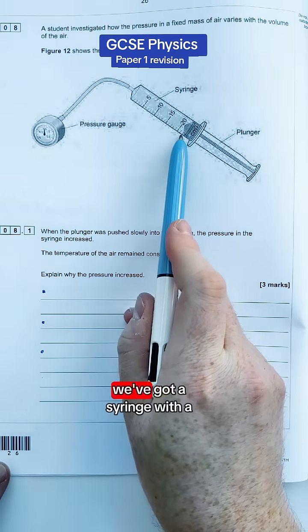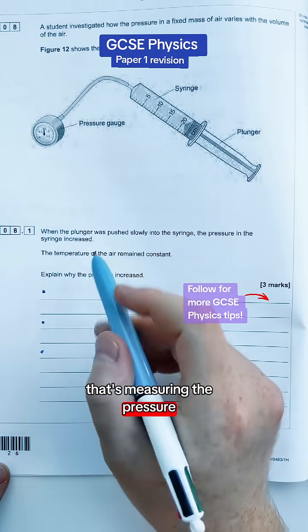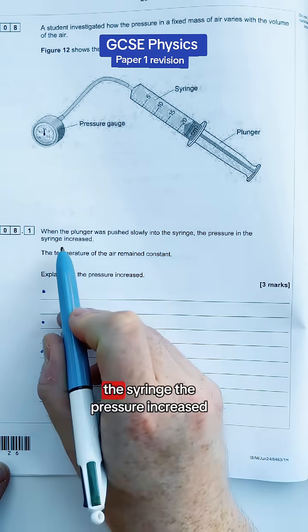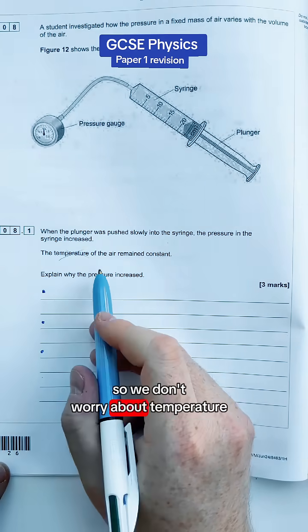So let's have a look at this question. We've got a syringe with a plunger pushing it in and a pressure gauge that's measuring the pressure. It says when the plunger was pushed slowly into the syringe, the pressure increased. The temperature does not change so we don't worry about temperature.